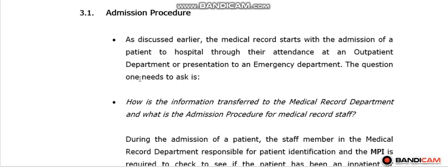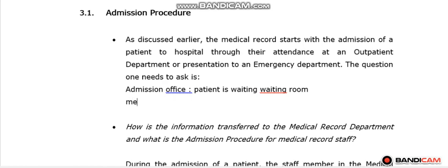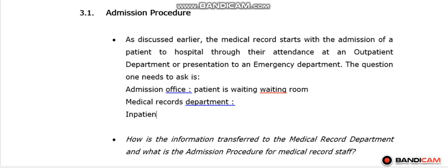The first question of this part is: how is the information transferred to the medical record department, and what are the procedures made? There are mainly three places. The first place is the admission office, where the patient waits in a waiting room. The second place is the medical record department, where all medical records are kept and maintained. The third place is the inpatient department, which contains the wards and the beds — the place where we put our patient.